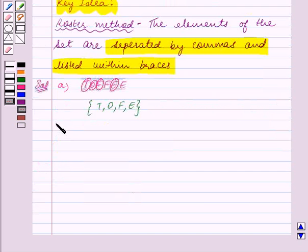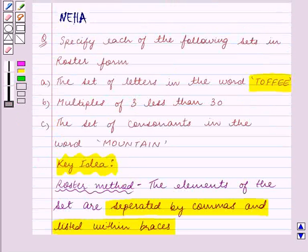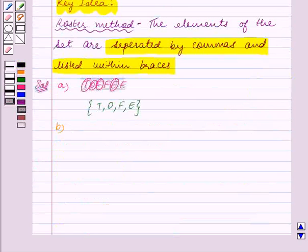Let's move on to part B now. In part B we have multiples of 3 less than 30. So we will write all the multiples of 3 less than 30 within braces separated by commas.